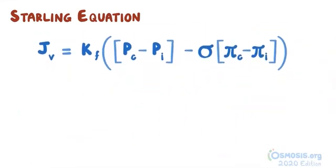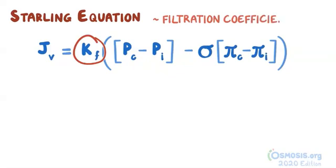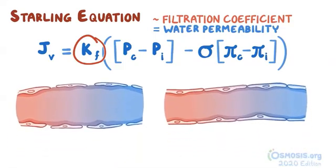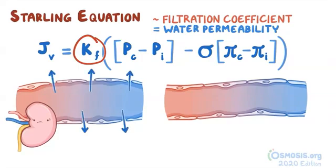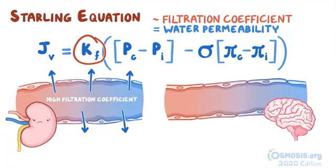Next, let's look at Kf, or filtration coefficient, which is not a force, but rather determines the water permeability of the capillary walls. It varies among different types of capillaries, and it depends on the size of the clefts or fenestrations. So, there are bigger fenestrations in glomerular capillaries, which let more water molecules through. And as a result, it has a high filtration coefficient. Cerebral capillaries, in comparison, have no fenestrations, so they have a low filtration coefficient.